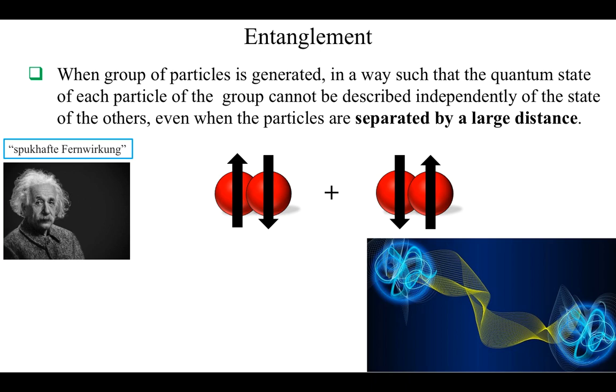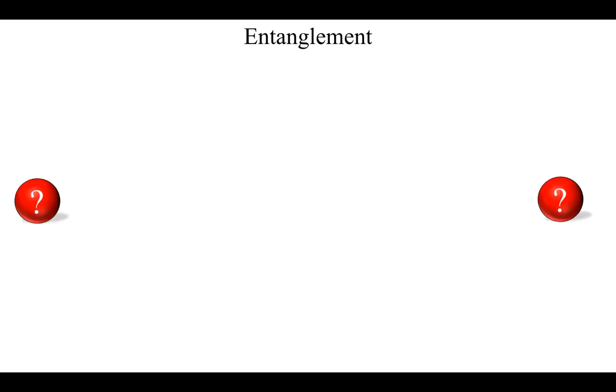Now, let's separate the electrons such that they cannot see, feel, or interact with each other at all. If we measure the spin of electron 1, then the spin of electron 2 will be instantaneously determined through spooky action at a distance.